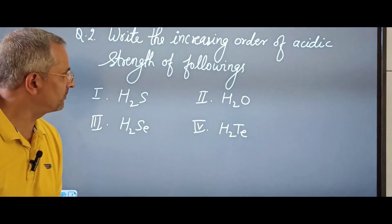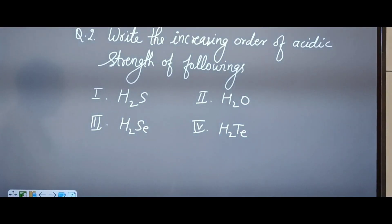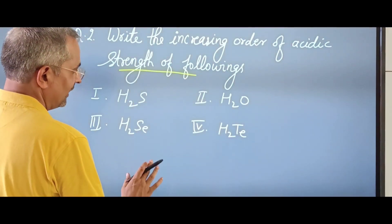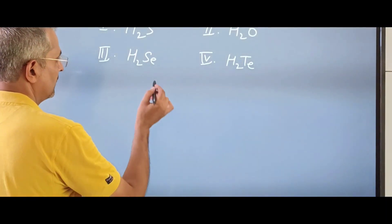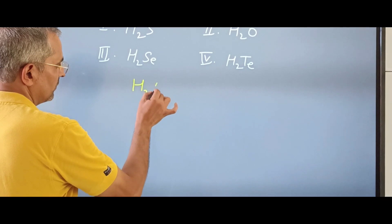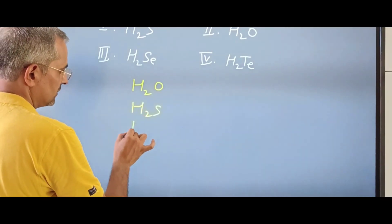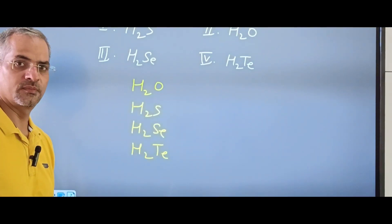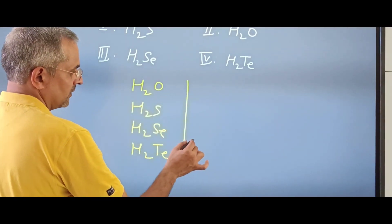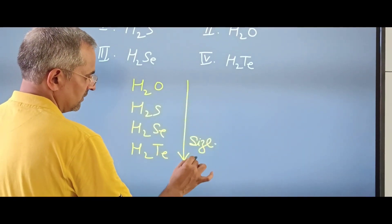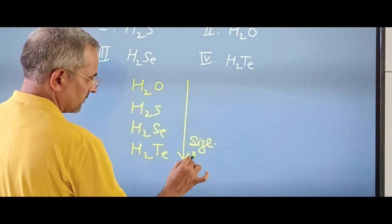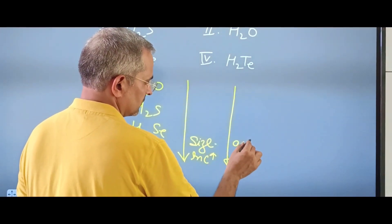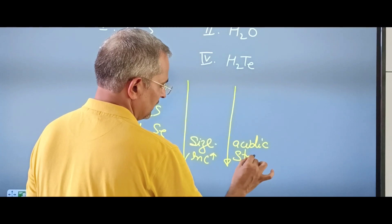Next question: write the increasing order of acidic strength of H₂O, H₂S, H₂Se, and H₂Te. As we move down the group, the size of the central atom increases, and therefore acidic strength also increases along the series.